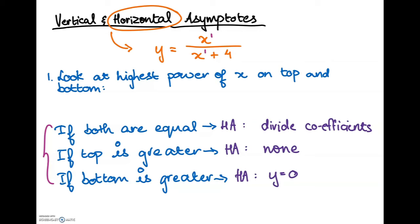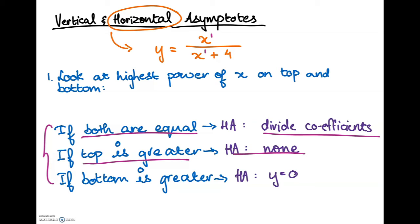Here are the rules: if both the top and bottom powers of x are equal, you divide the coefficients and that's your horizontal asymptote. If the top power is greater — say the top has x squared and the bottom only has x — there will be no horizontal asymptote, so the answer is none. If the bottom power is greater — say the bottom has x squared — then your horizontal asymptote is y equals 0. You need to memorize this, but you can come up with acronyms to help.